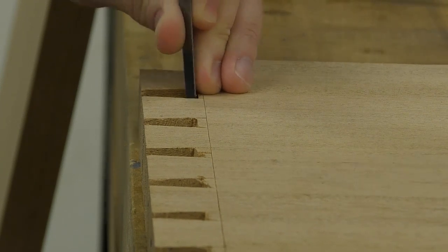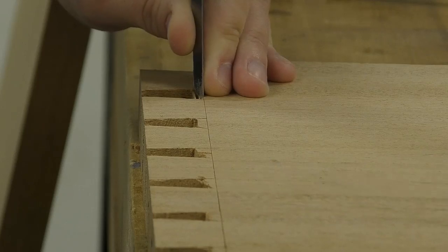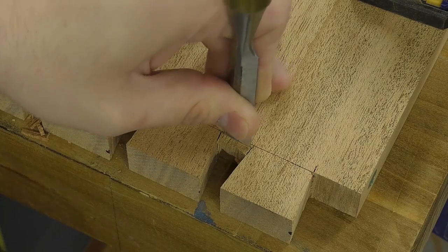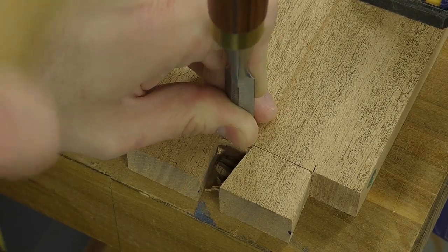When chiseling the waste, I like to remove the majority of the waste in front of the scribe line and with about a sixteenth of waste left, I like to then put the chisel in the scribe line and remove the waste. I like to chisel it down about halfway, flip the board over, and then remove the rest.